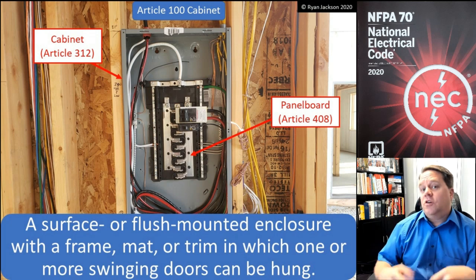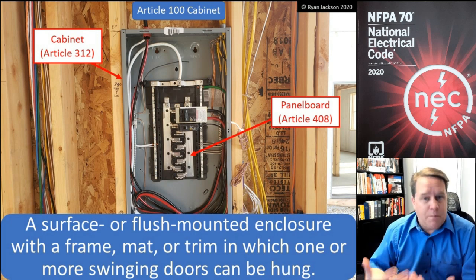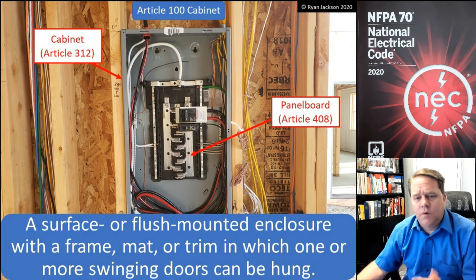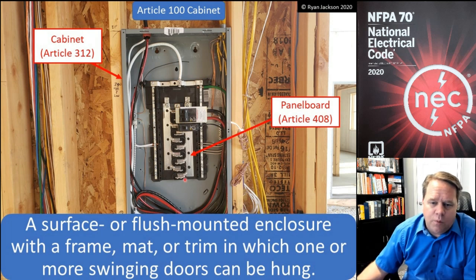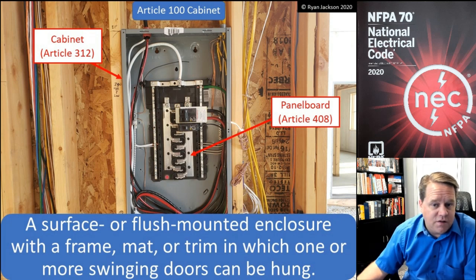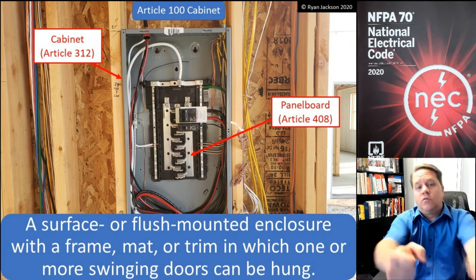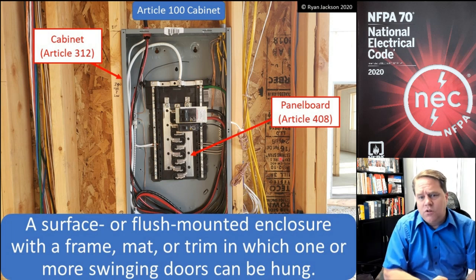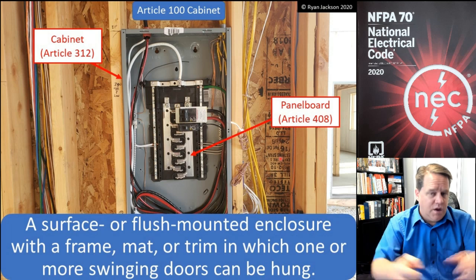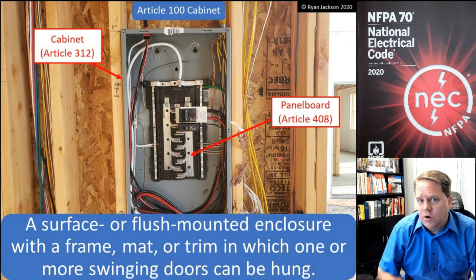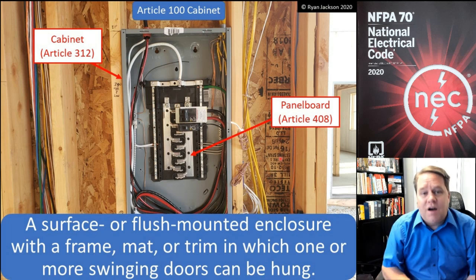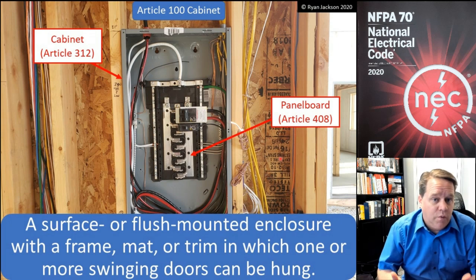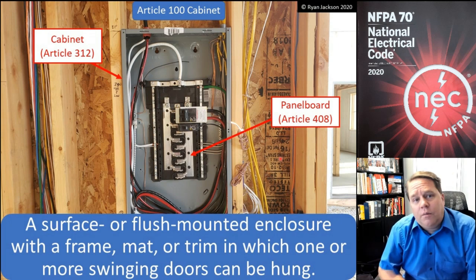A cabinet is what a lot of people refer to as a panel board. Take a look at the picture — the panel board can be taken out of the cabinet. The panel board is just the guts, it's the bus bars. I could remove the panel board and still have a cabinet. The large piece of metal that we hang in the wall is not a panel board — the panel board goes inside that enclosure, which is what we call a cabinet.